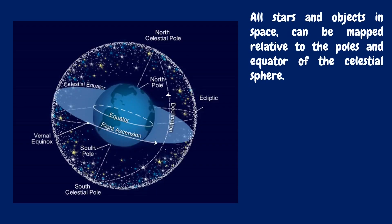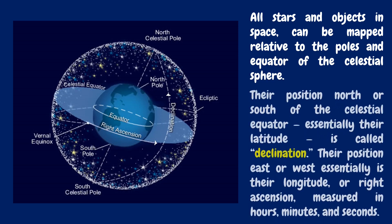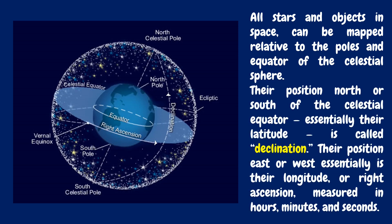All stars and objects in space can be mapped relative to the poles and equator of the celestial sphere. Their position north or south of the celestial equator, essentially their latitude, is called declination. Their position east or west, essentially their longitude, is called right ascension, measured in hours, minutes, and seconds.